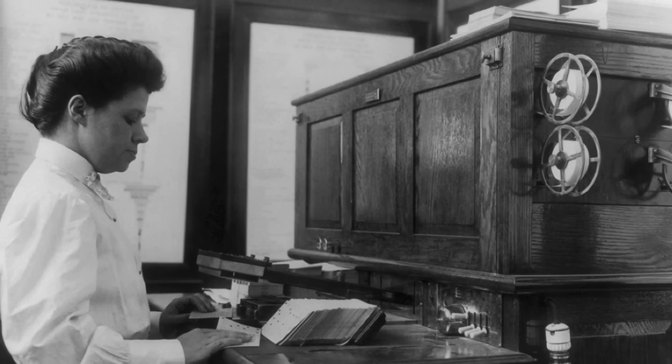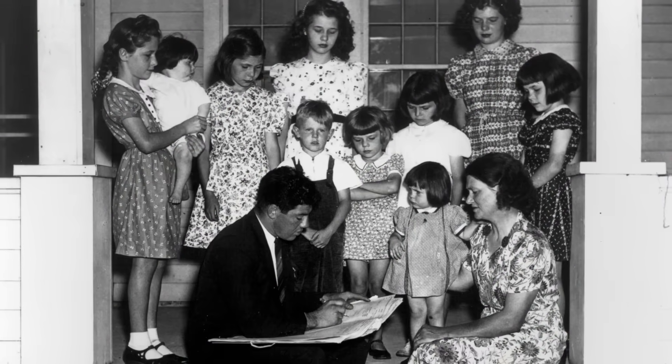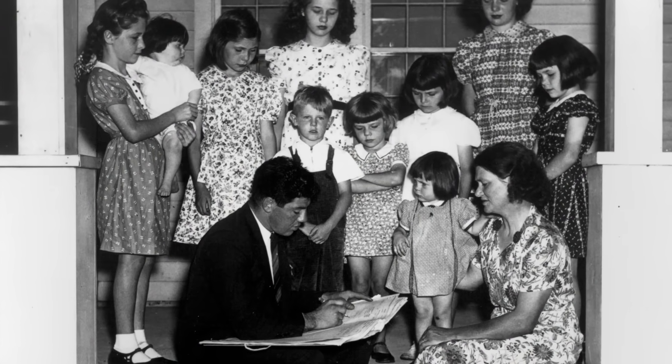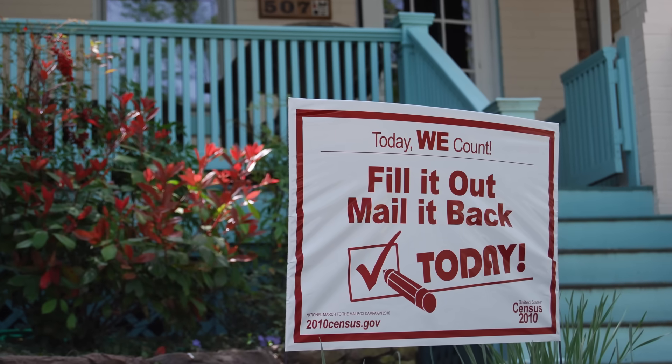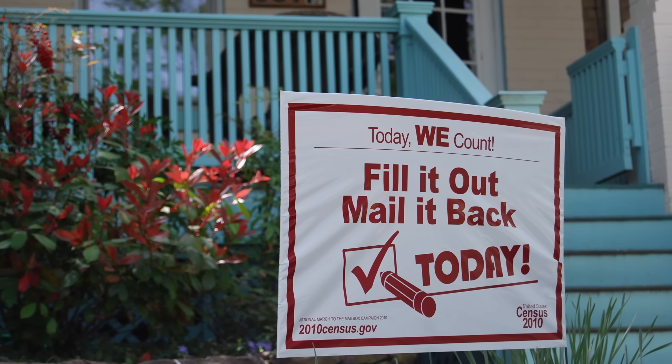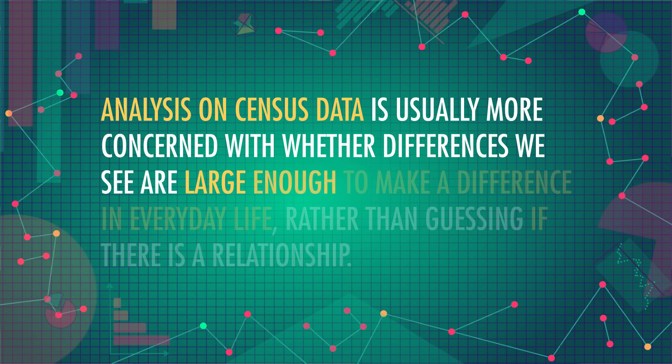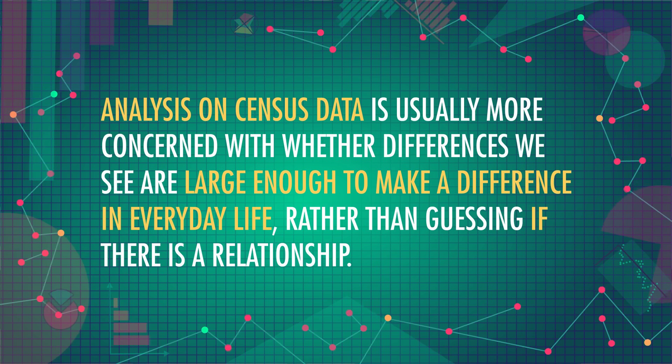The length of time it took to complete the census is part of the reason we have computers. So why collect census data instead of just sampling the population? The census could cost more than fifteen billion dollars in 2020. But the Constitution says we have to, and the census provides the truest measure of the population we can get — it minimizes sampling error and functions as a benchmark for future studies. It can also give researchers very specific information about small groups. Doing statistics on census data is different because most statistical inference takes a small sample and uses it to make guesses about the population, but with a census we already have data from the entire population — we can just see the differences directly. Analysis on census data is more concerned with whether differences are large enough to matter in everyday life, rather than guessing if a relationship exists.